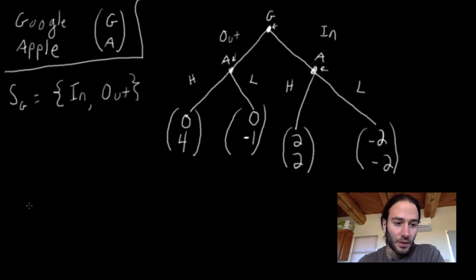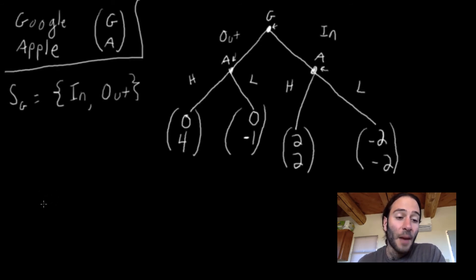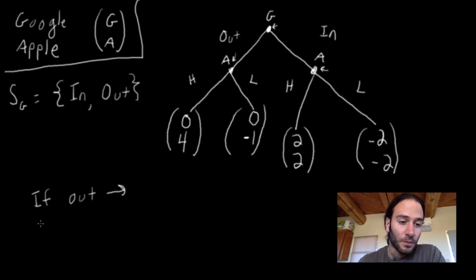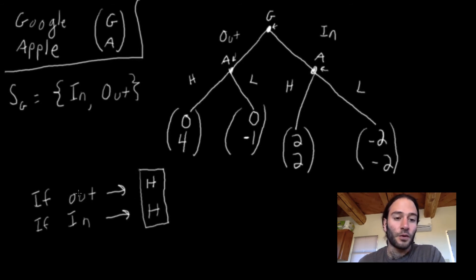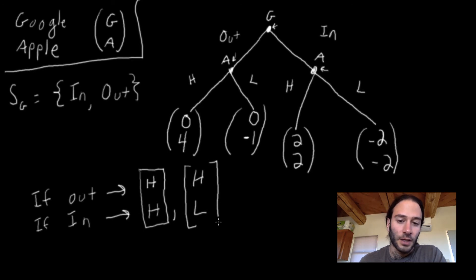How about the strategy for Apple? Apple has to specify what it would do at each of its decision nodes. Apple's strategy is of the form: if Google plays 'out,' then do something; if Google plays 'in,' then do something. So one strategy is HH — if Google plays out, Apple plays high price; if Google plays in, Apple plays high price. Another strategy is HL — if Google plays out, Apple plays high; if Google plays in, Apple plays low.